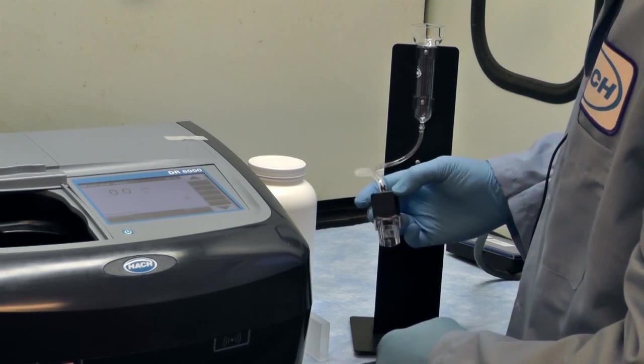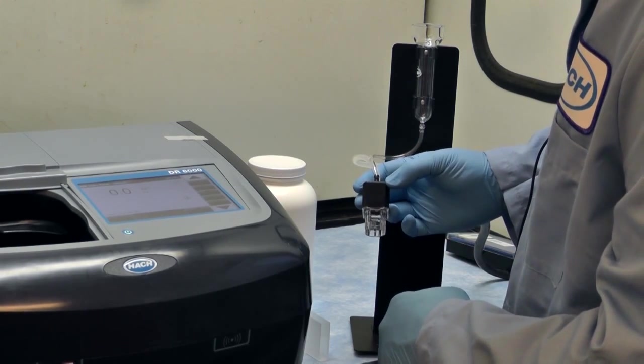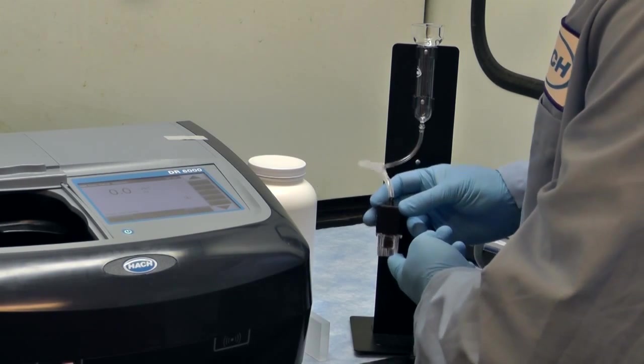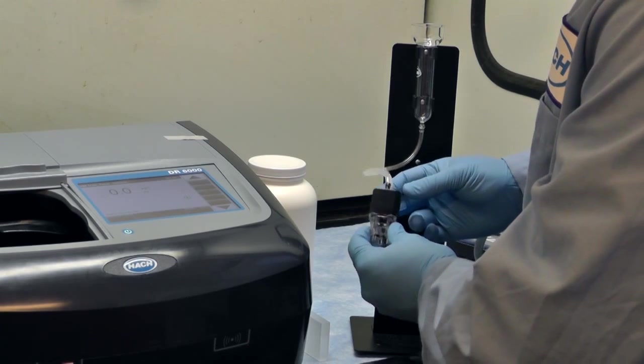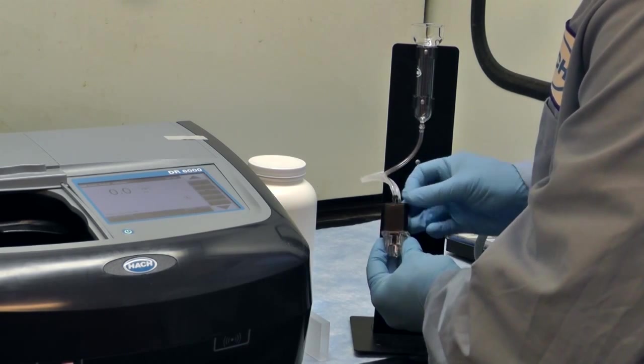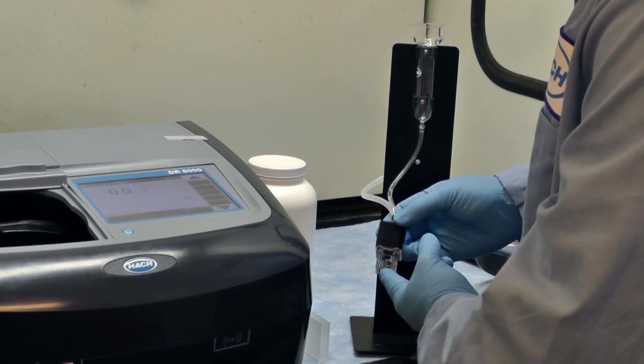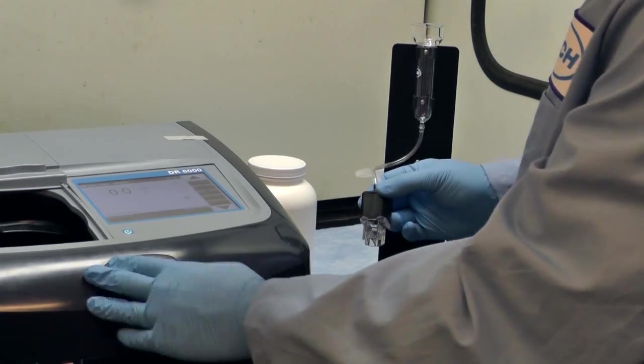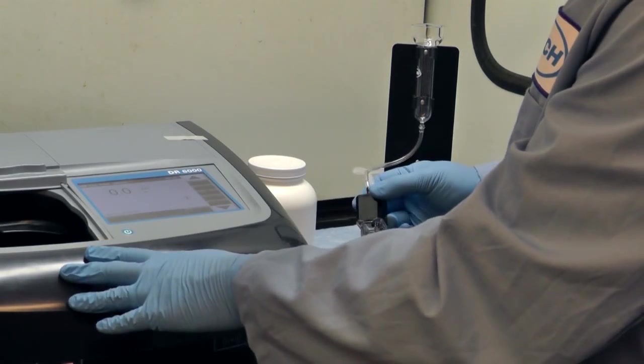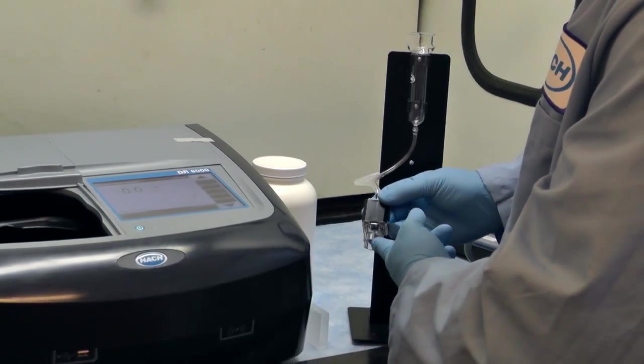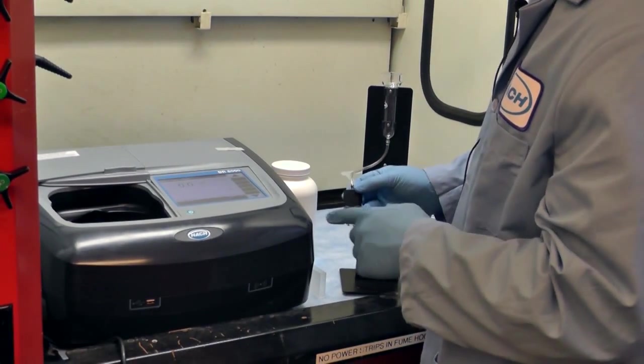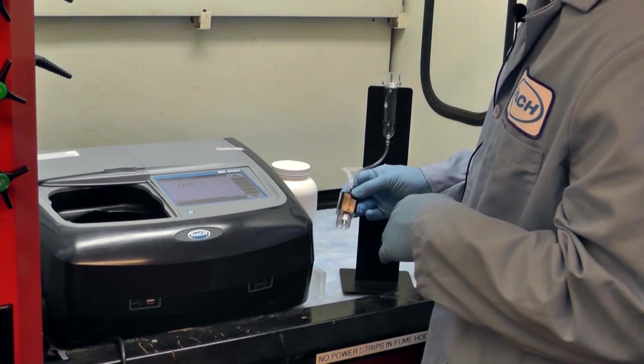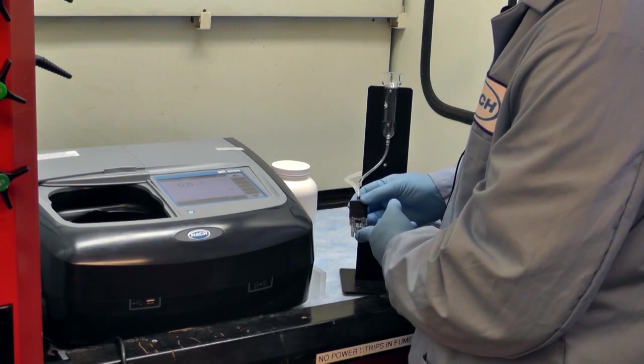The other critical point about using the pour through cell is it needs to be absolutely firmly placed in your spectrophotometer. You can't be bumping the cell at all during analysis or you will get wildly inaccurate results. This isn't such a big problem if you're using it with the DR6000 because the DR6000 has a closed lid during analysis so it's pretty much impossible to actually wiggle this cell. But if you're using it with a DR3900 that has an open top, you'll need to take extra care to make sure that you don't bump this cell.